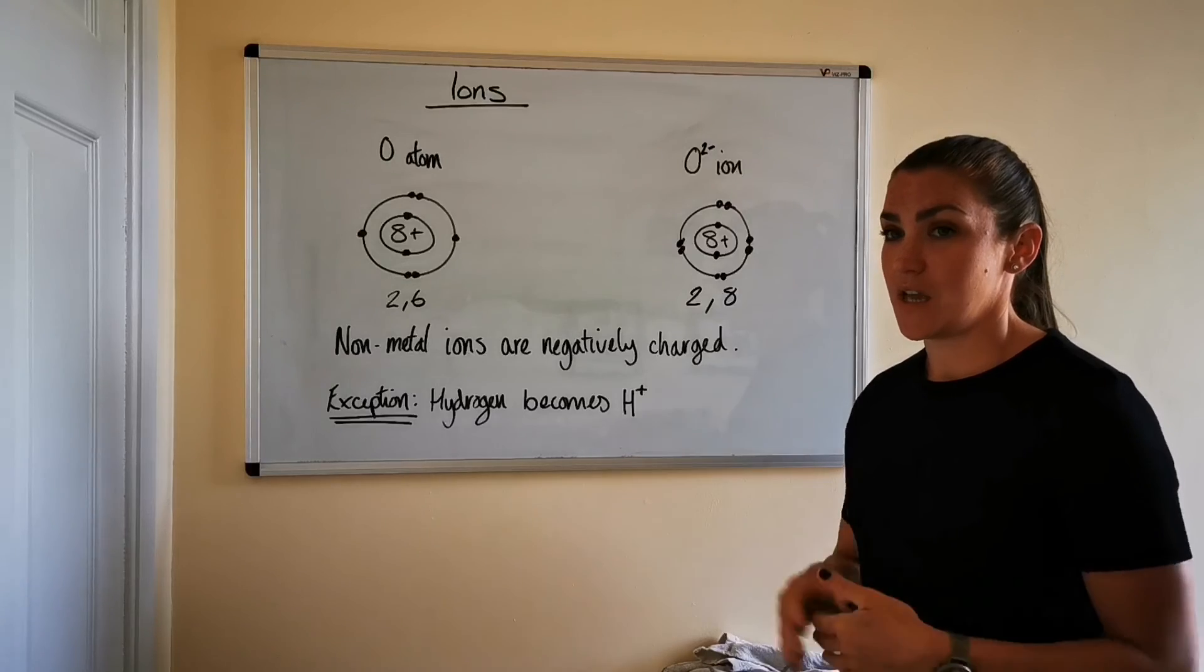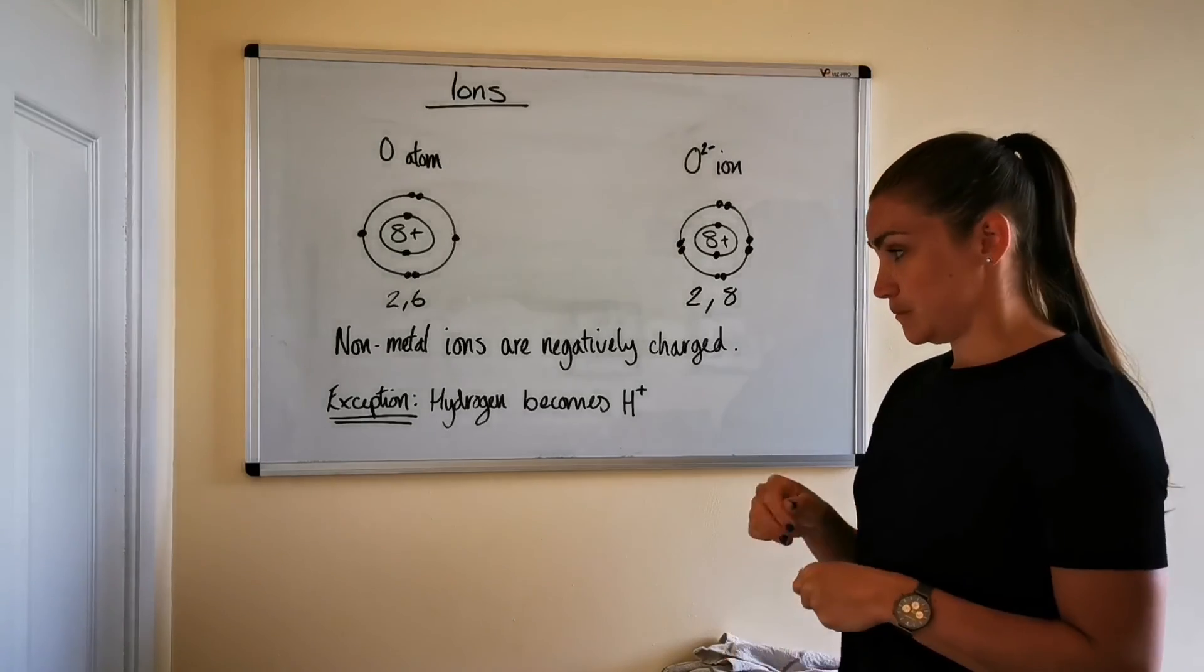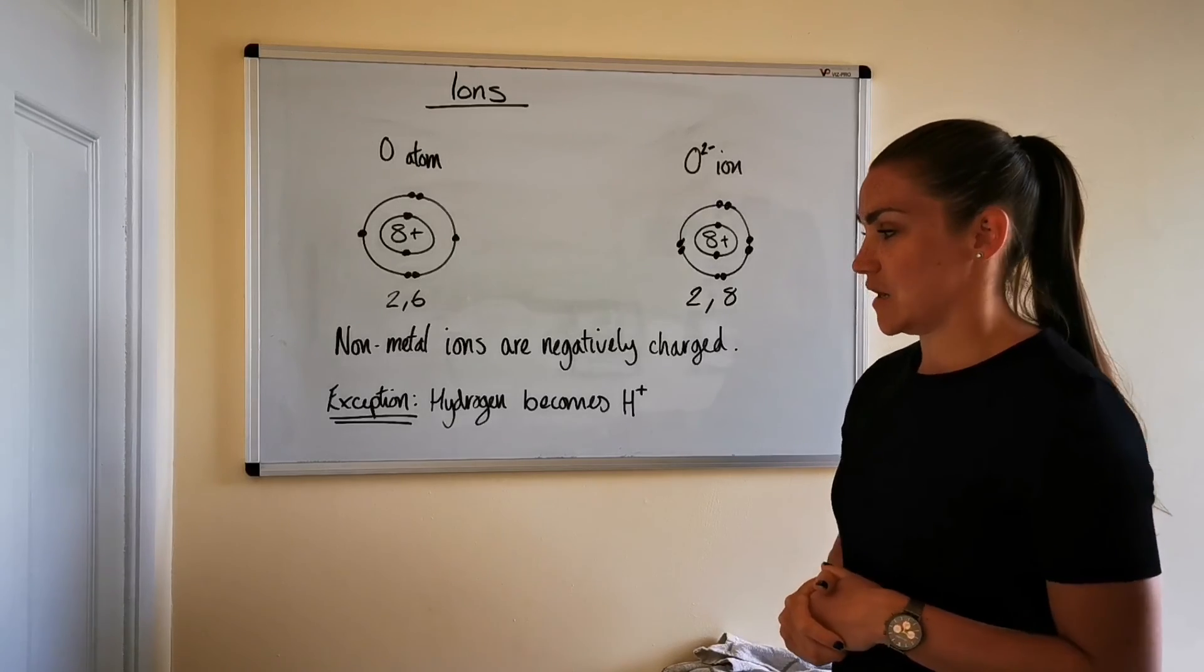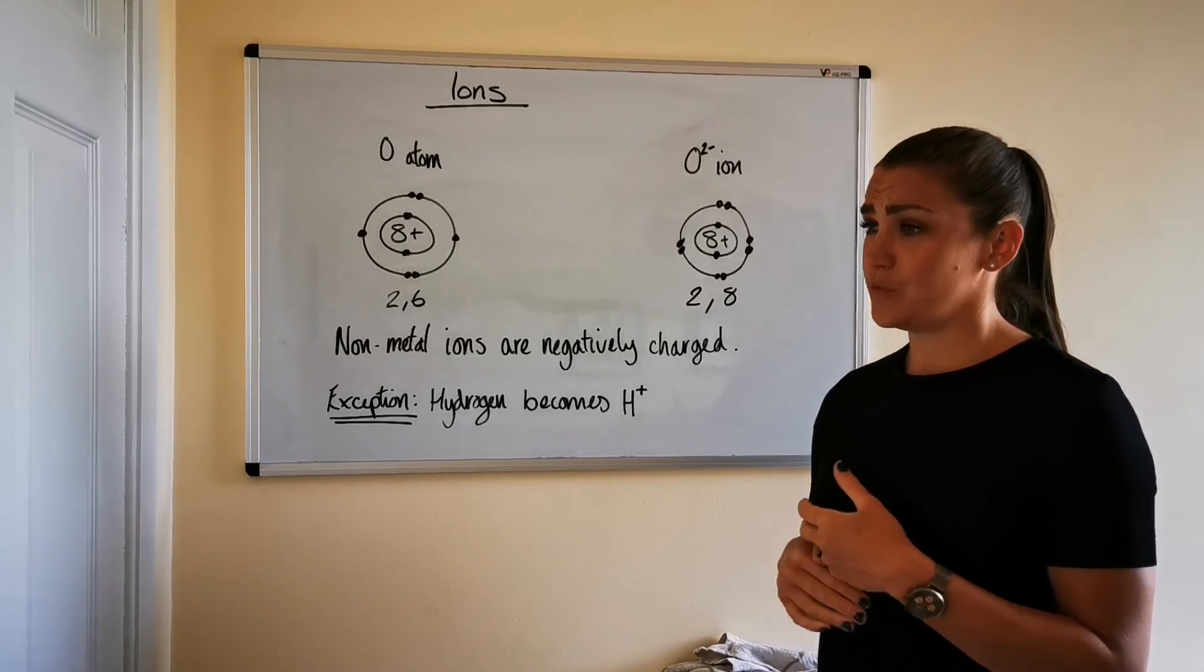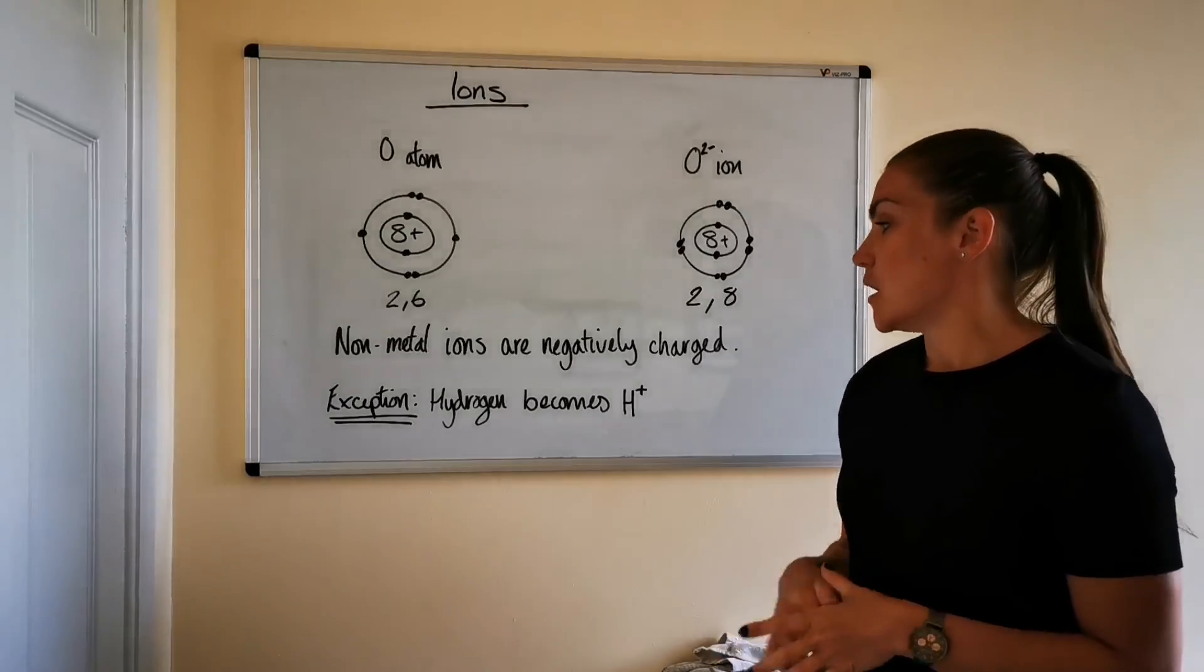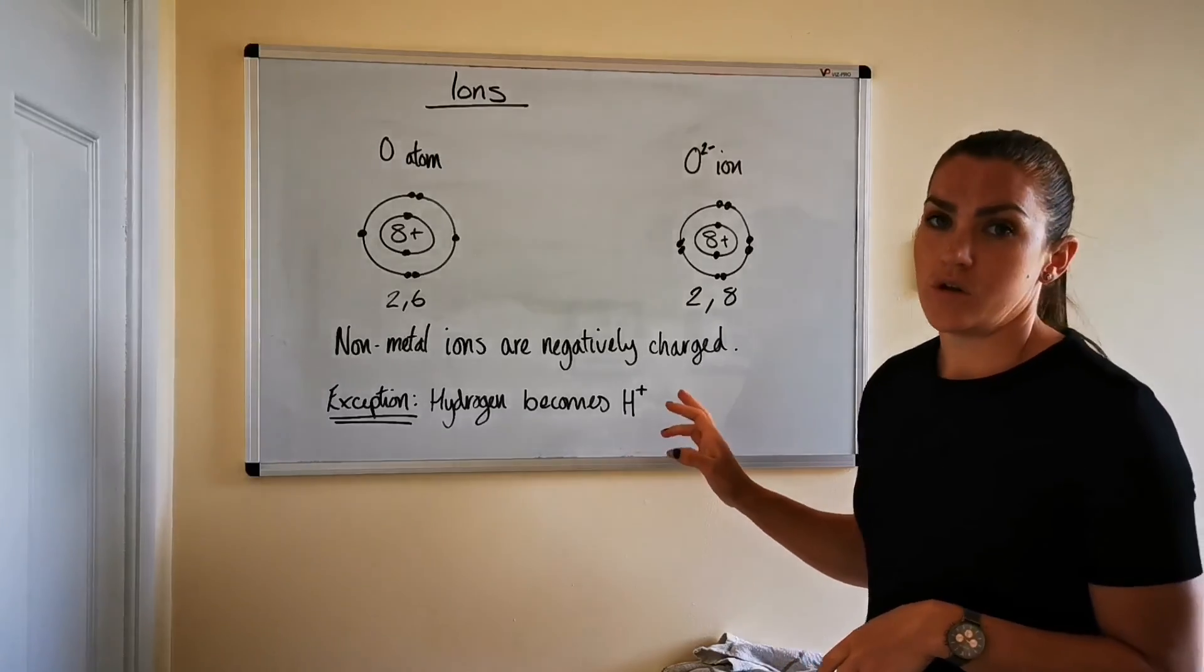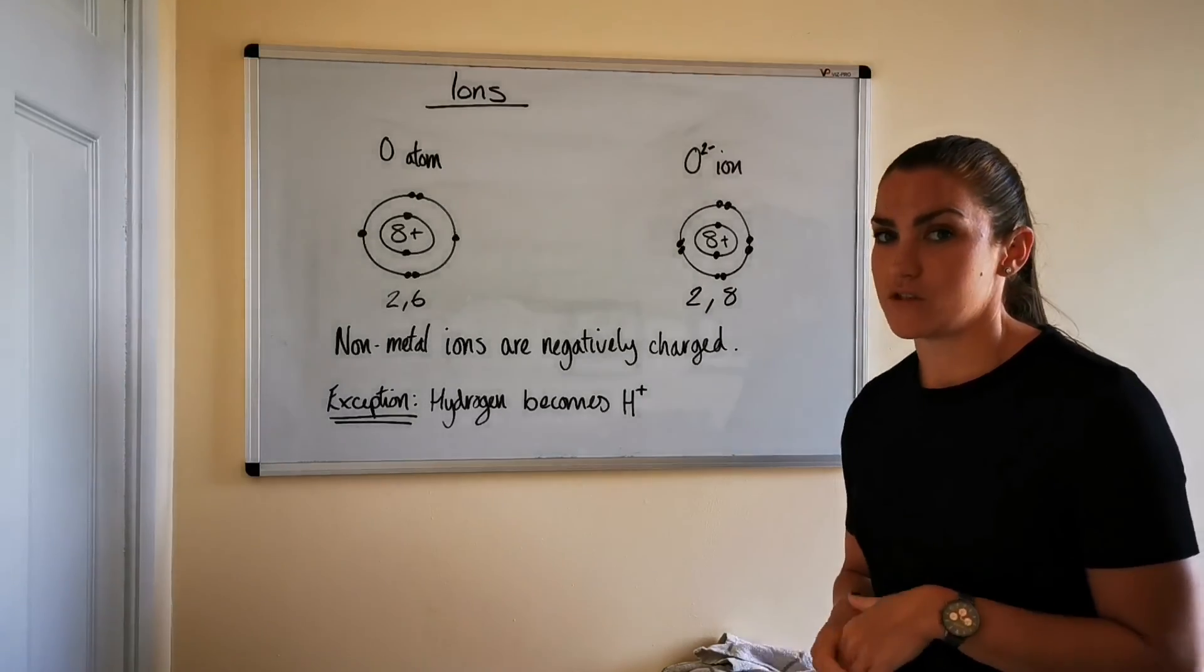But there are other reasons behind hydrogen's placement and there are arguments for why it should potentially be above group seven but we'll get to those eventually but this is just something to watch out for when you're talking about ions is that hydrogen is an exception to that metal non-metal rule.